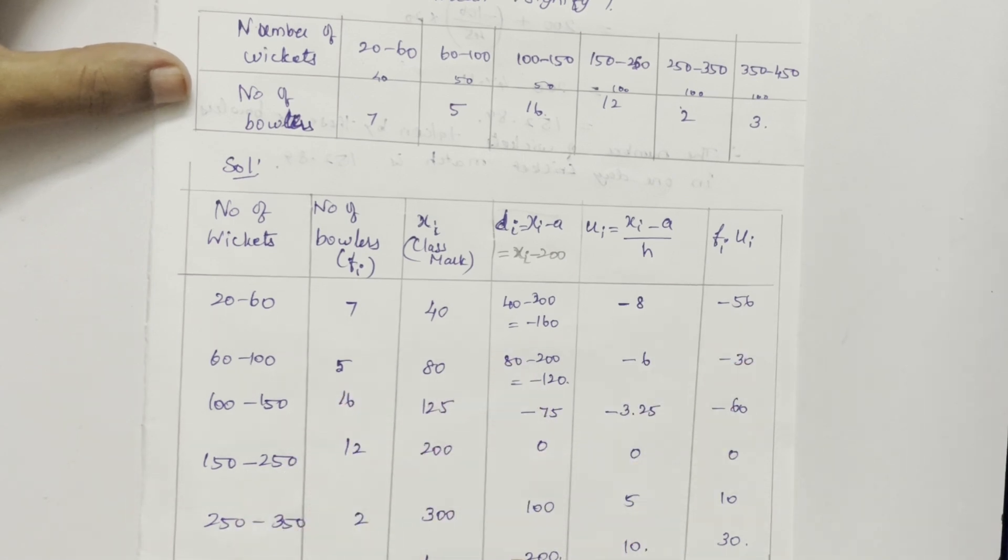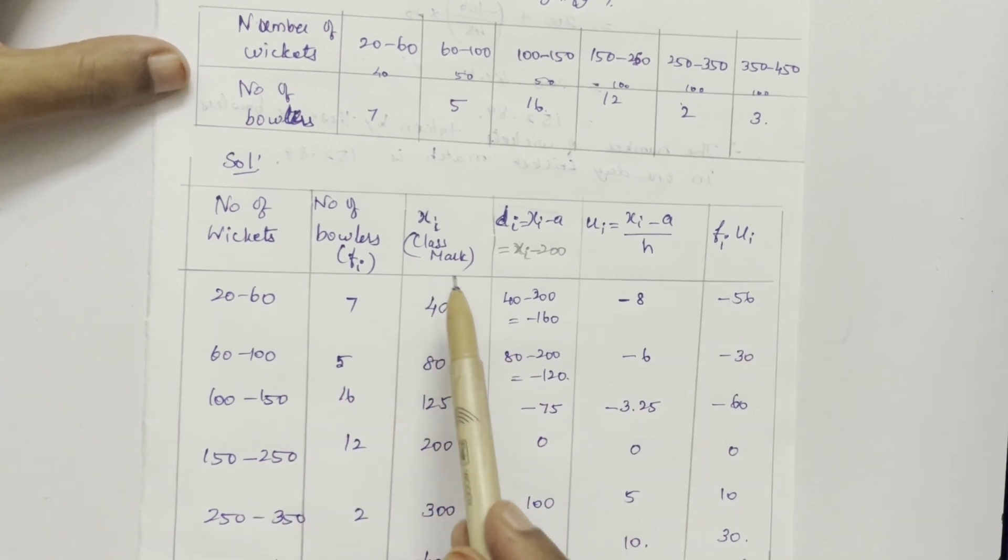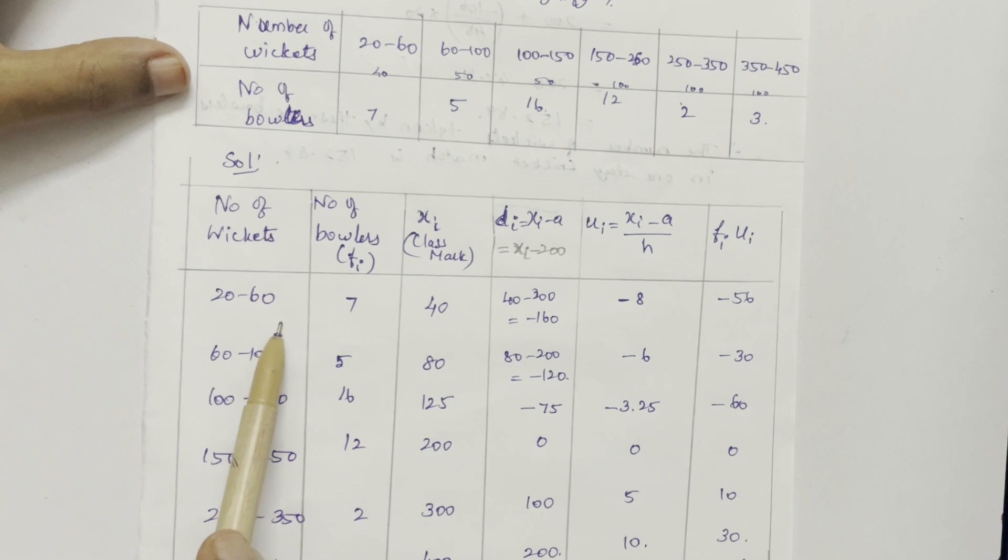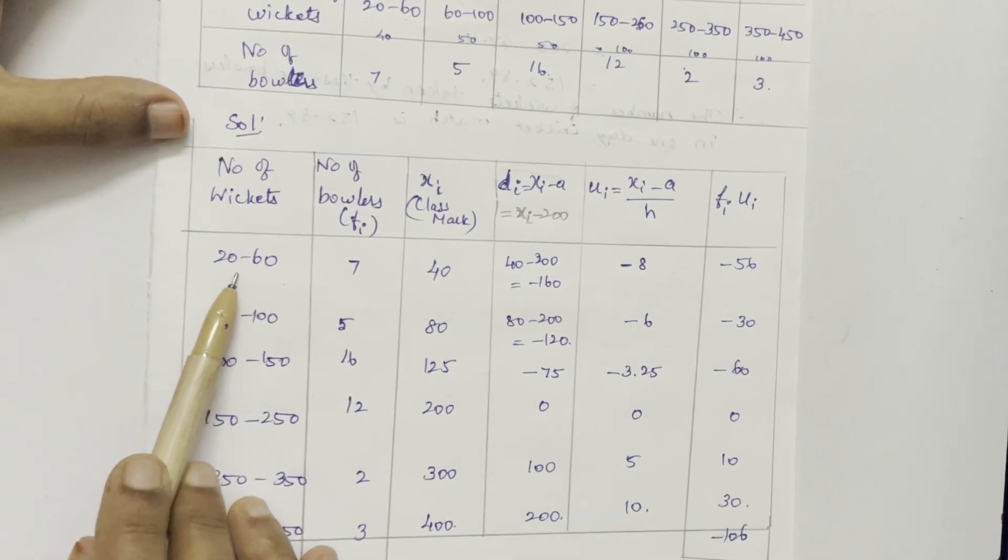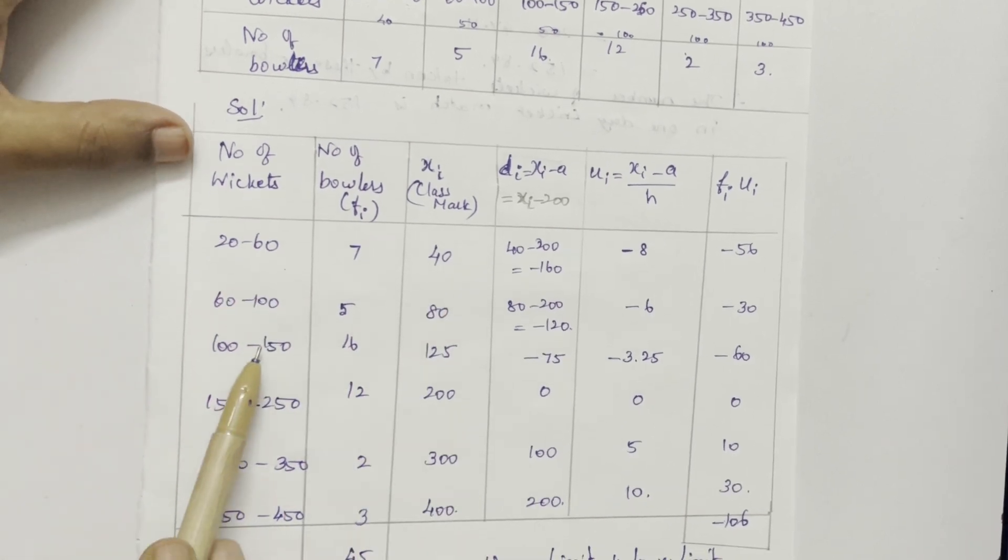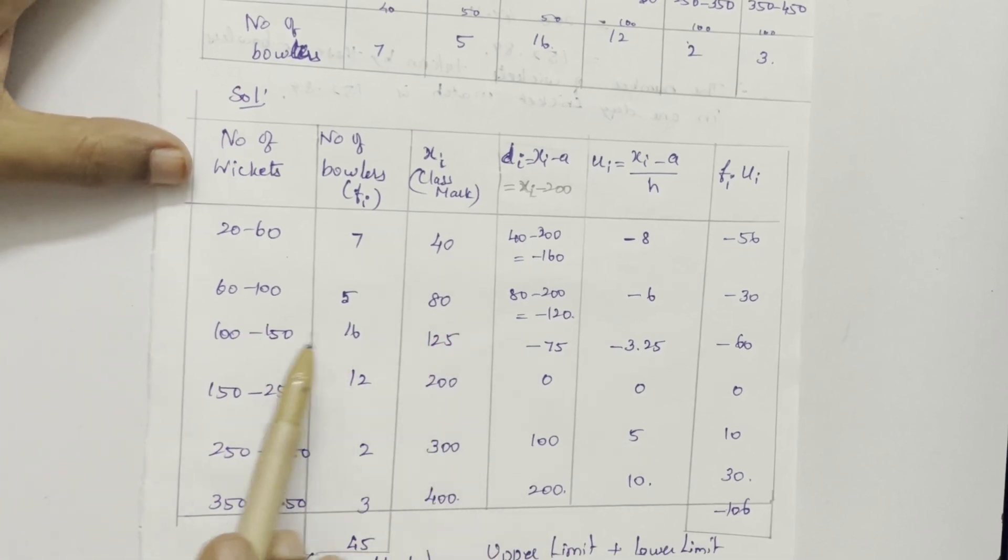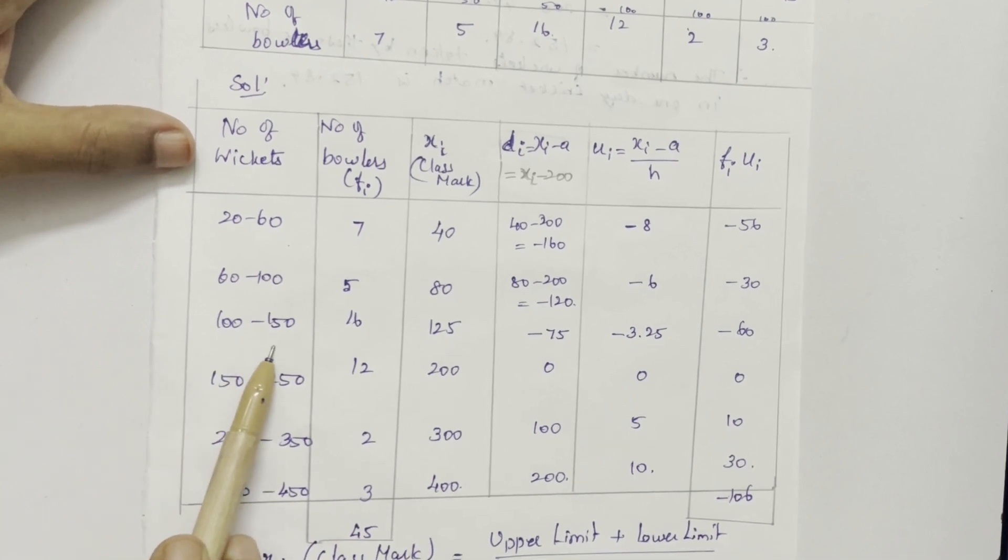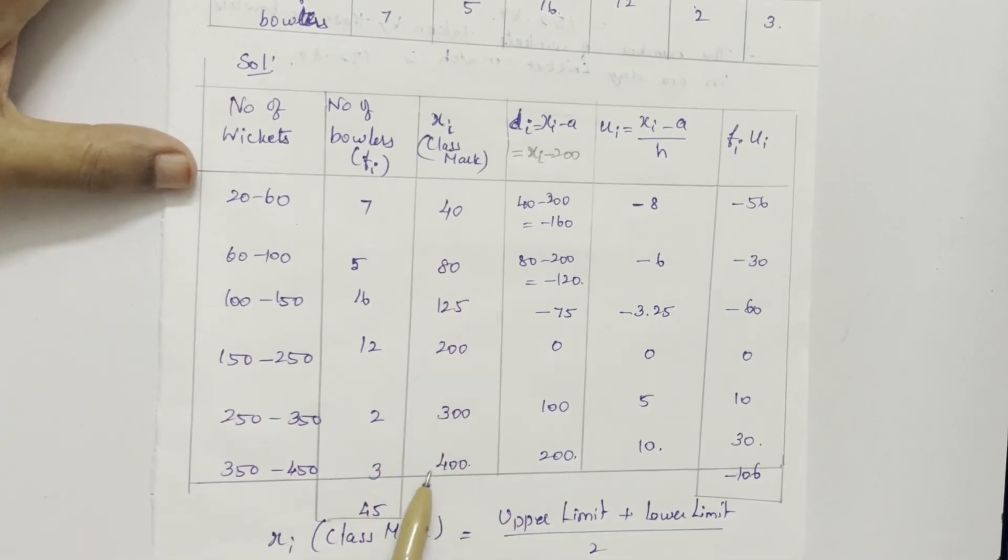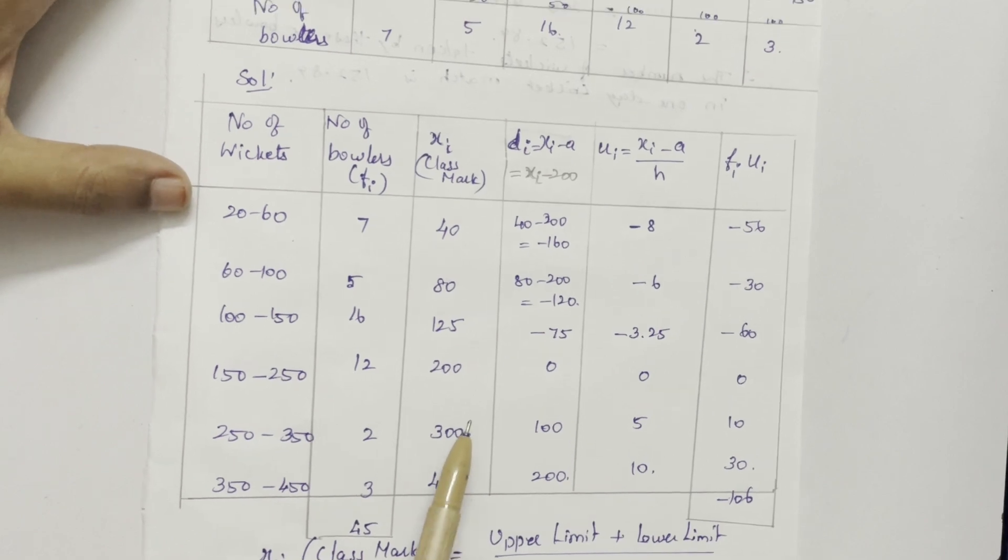We are calculating now interval upper limit plus lower limit by 2 is the class mark that is XI. 60 plus 20 is 80, 80 by 2 is 40. 100 plus 60, 160 by 2 is 80. 150 plus 100 is 250, 250 by 2 is 125. In that way we have calculated XI that is class mark.